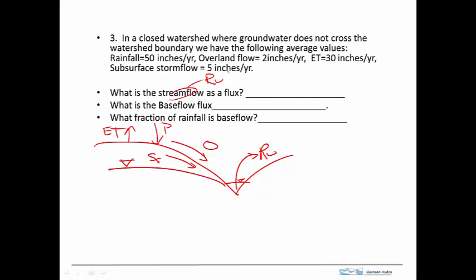So the first thing we'll do here is a balance, and we'll use just the whole watershed balance. So the control volume looks like that. And importantly, the things that are crossing the control volume are the runoff, the precipitation, and the ET. The overland flow and the subsurface storm flow don't cross this control volume.